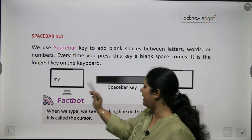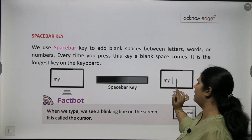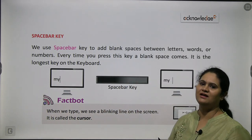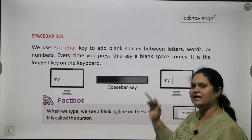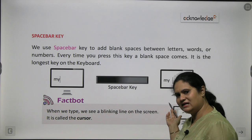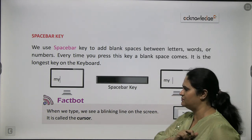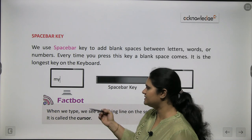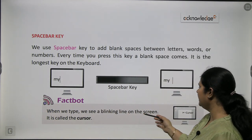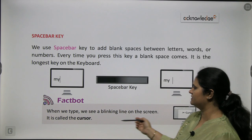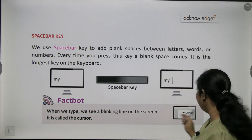My cursor is here. When I press the space bar key, it shifts one place in the box. We leave this space so that we can continue with the next word, creating a blank space on the screen. When we see a blinking line on the screen, it is called a cursor.